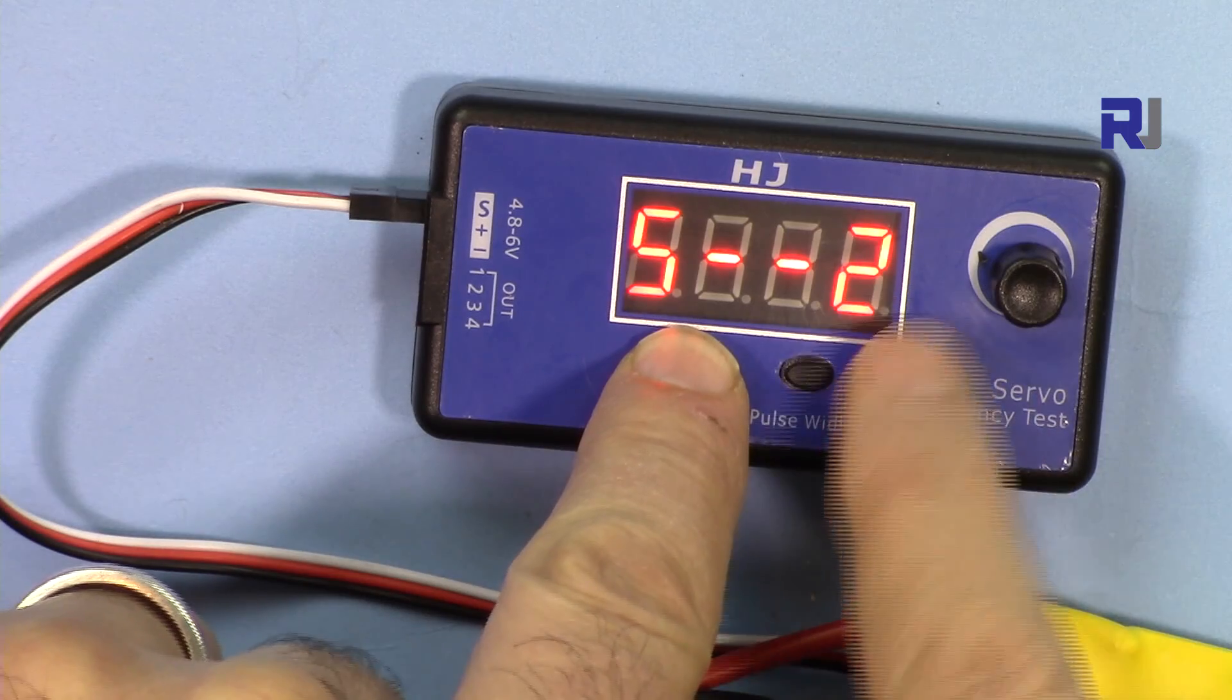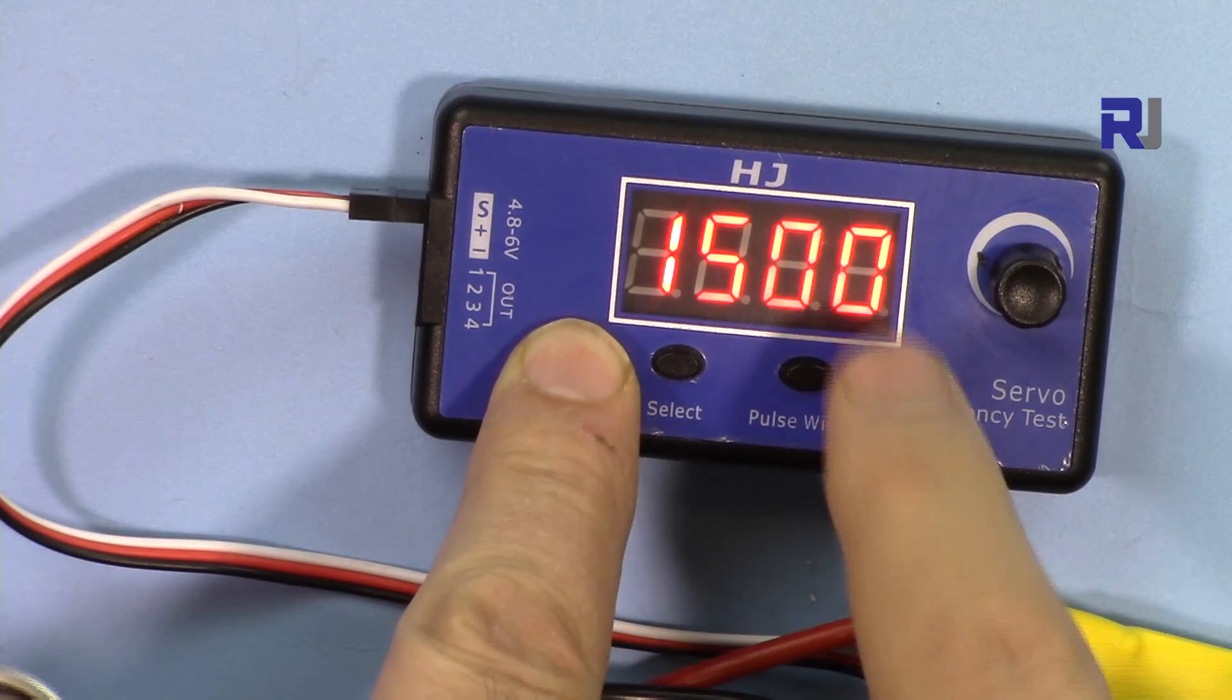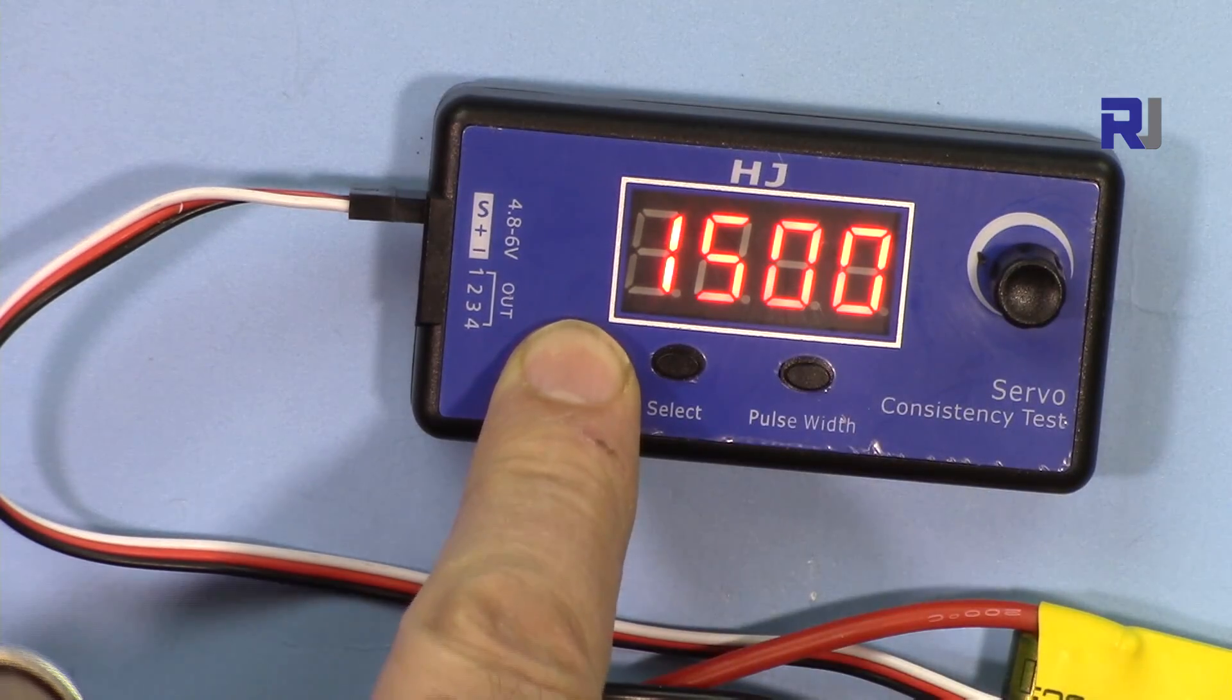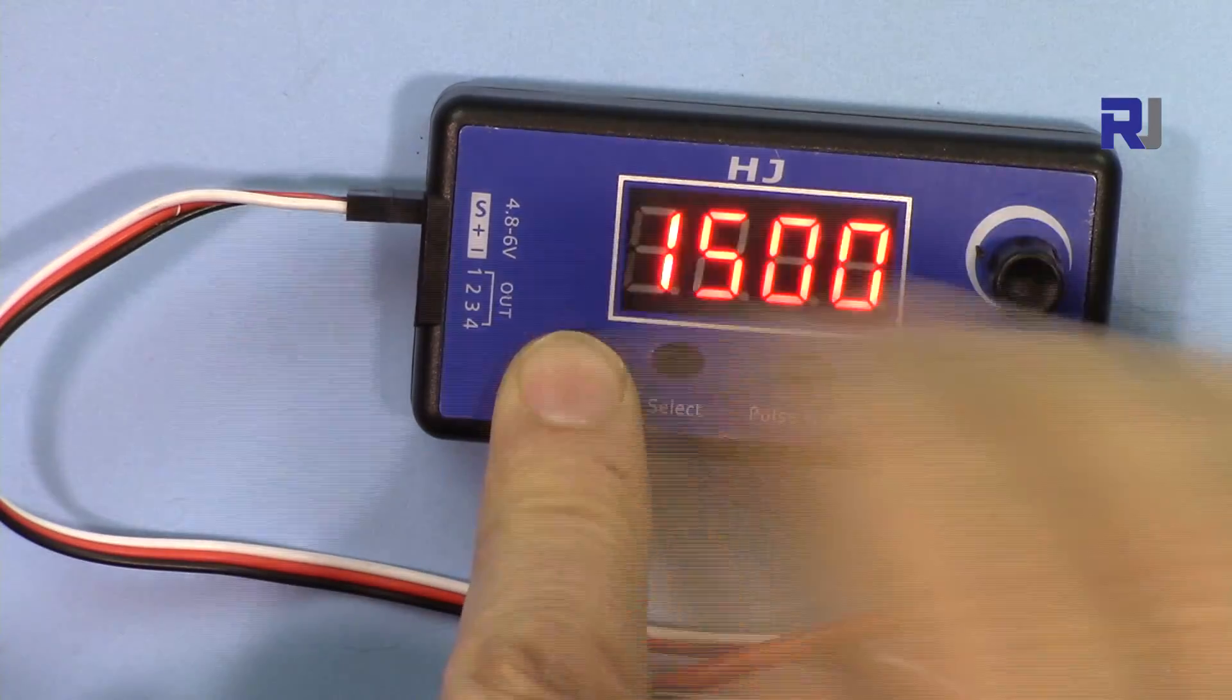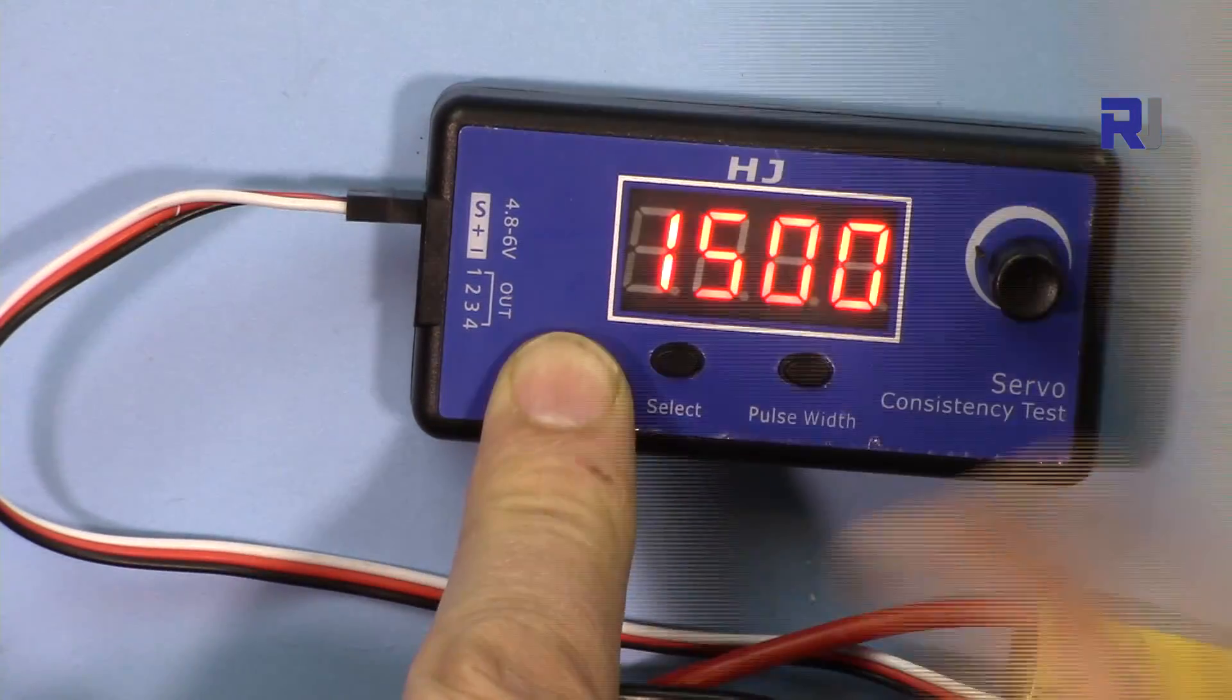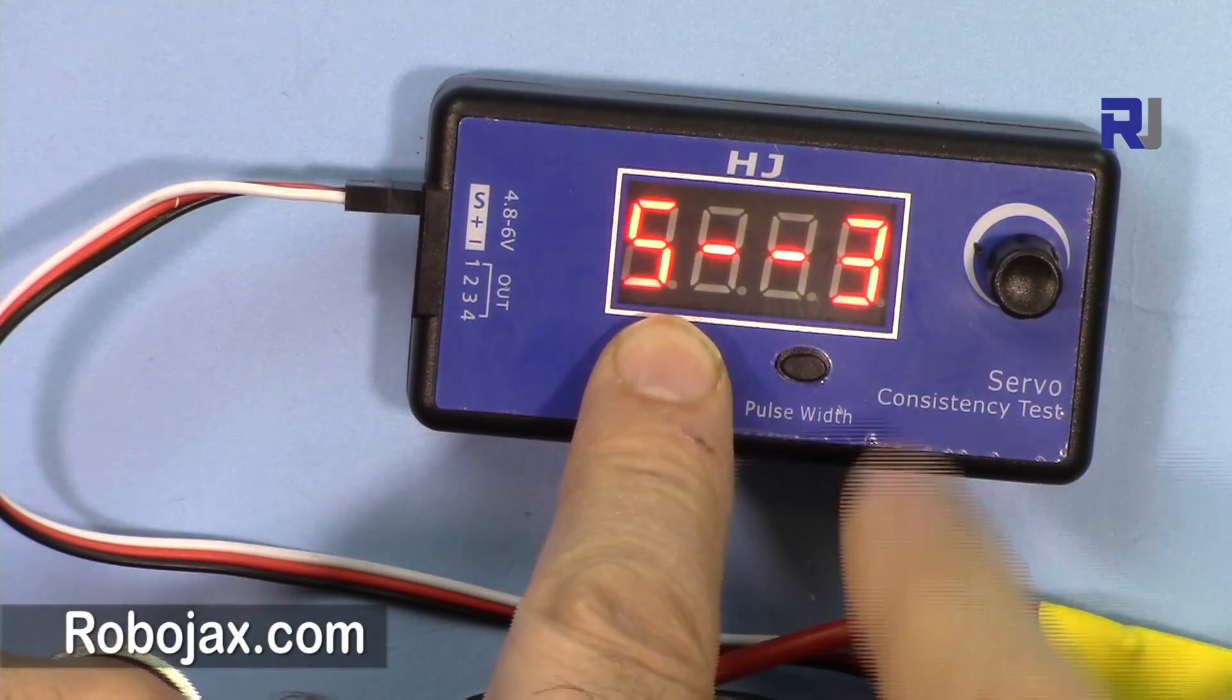When you press this select, you see we are in mode 2 now. When you see this, this is S2. When you release it, that is the neutral so it goes at 1500 where the servo stays at the middle. You can test the steering wheel, steering for the car, or wing, or whatever it is.